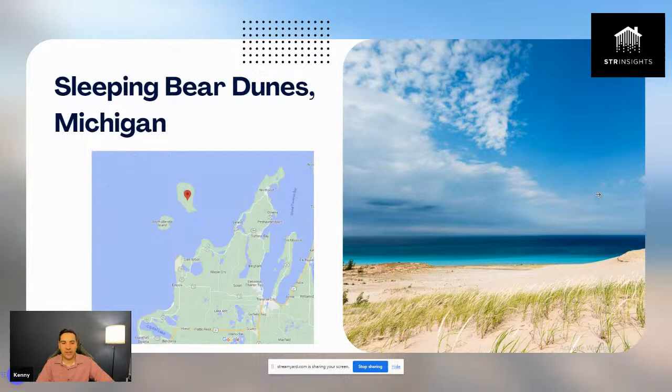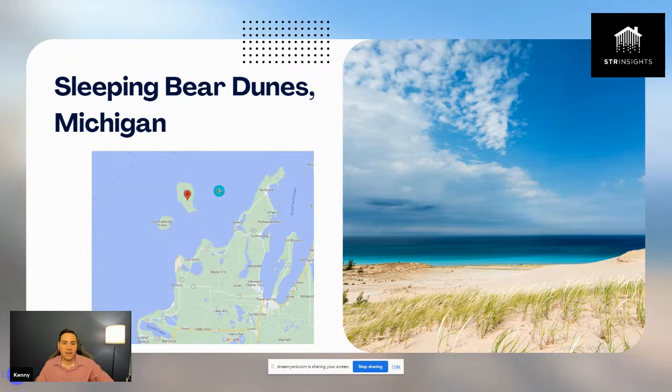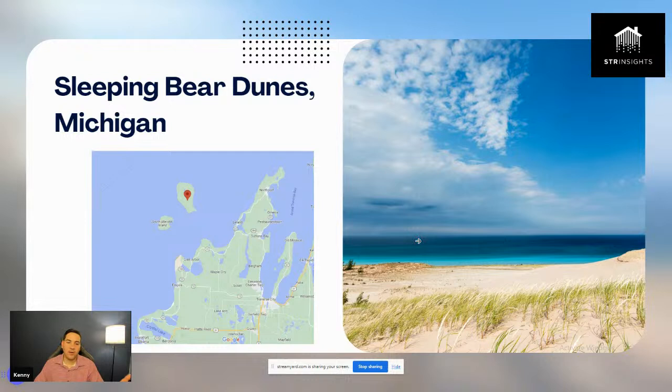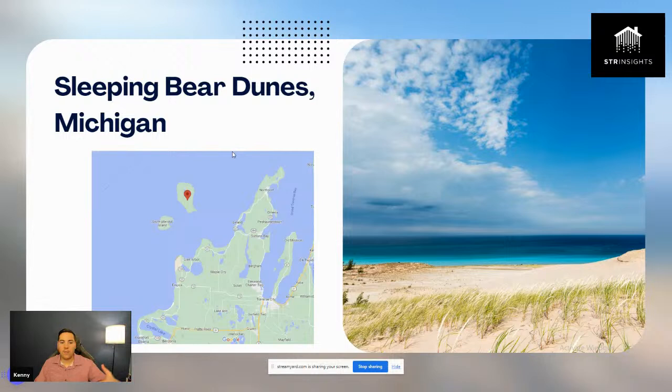Next example: Sleeping Bear Dunes, Michigan. This is a really cool place — I was looking at images and it's beautiful, like a national lakeshore located at the tip of Michigan's lower peninsula. This region is going to break my key attribute of being near a major city, but because it's a national park it drives its own appeal. You also have Traverse City, which has really grown too.